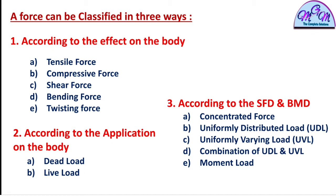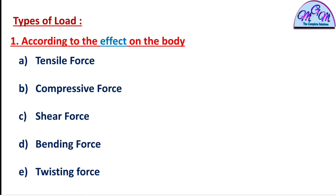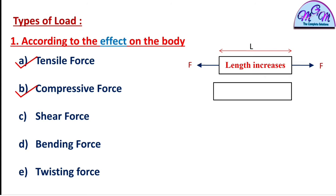According to the effect on the body, forces are classified into five categories: tensile force, compressive force, shear force, bending force, and twisting force. Tensile force is that force which tries to increase the length of a body. Suppose there is a rectangular block of length L and a force is applied — this force will always try to increase the length of the body. This type of force is called tensile force.